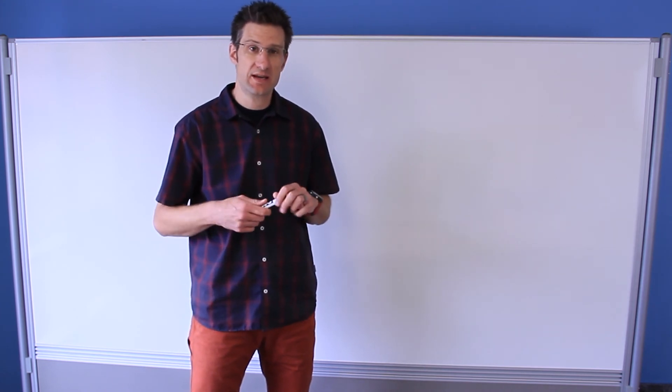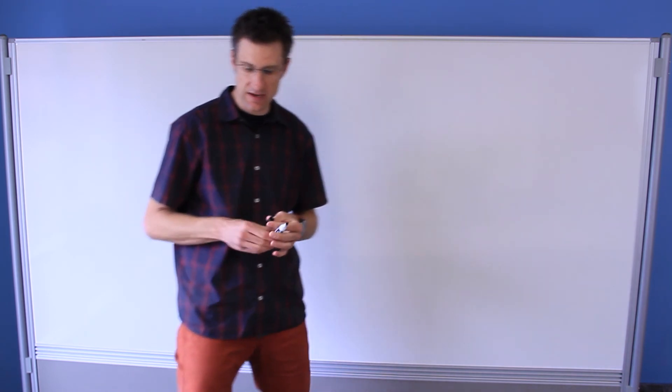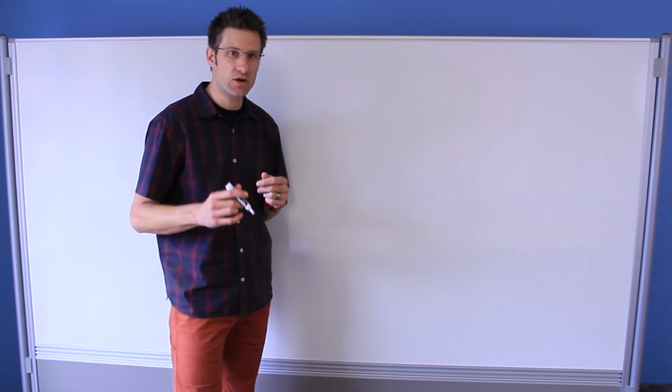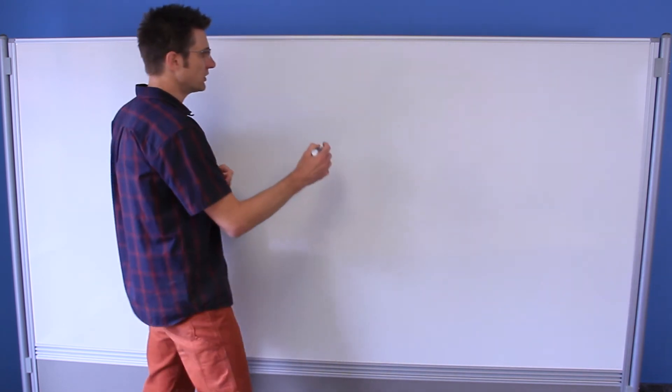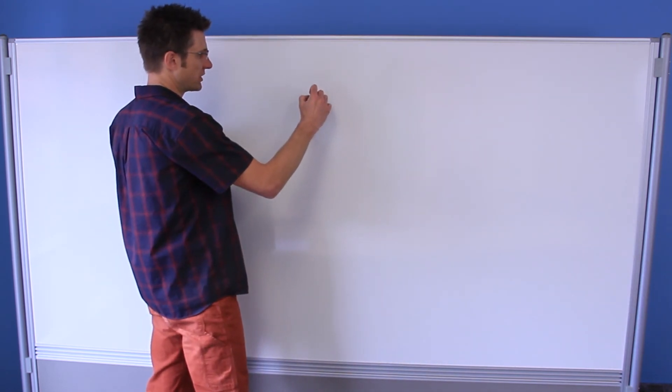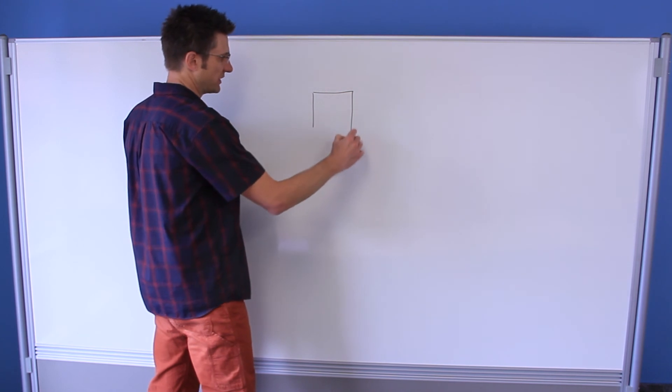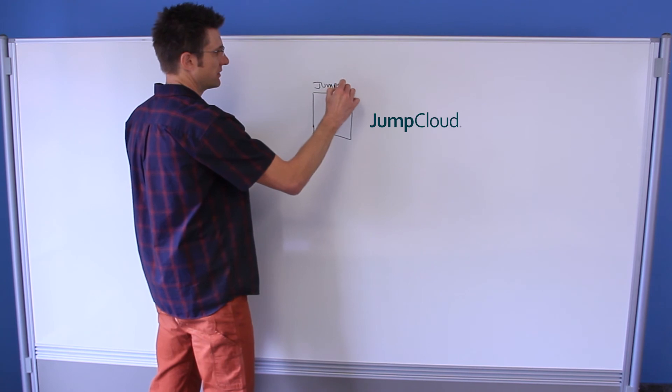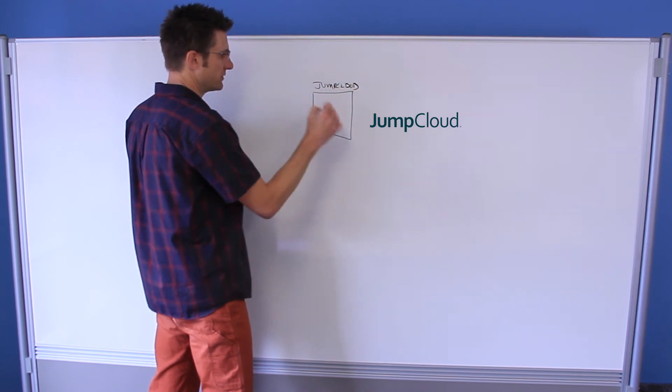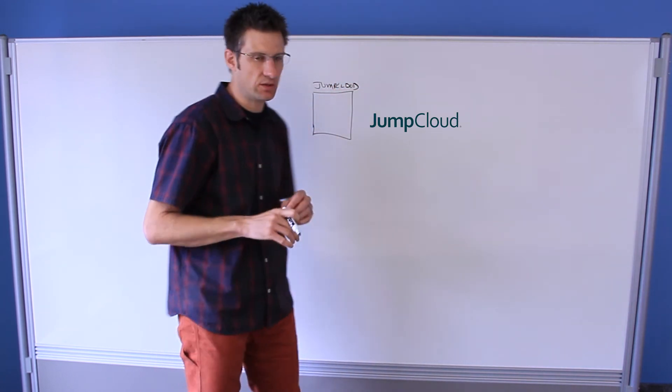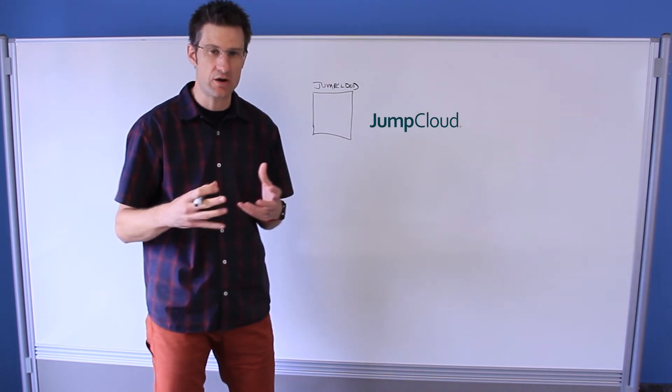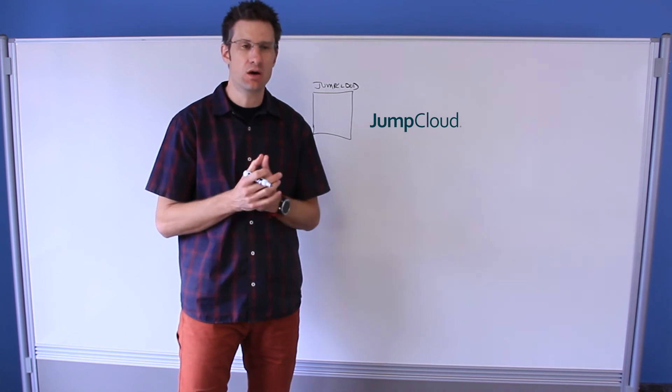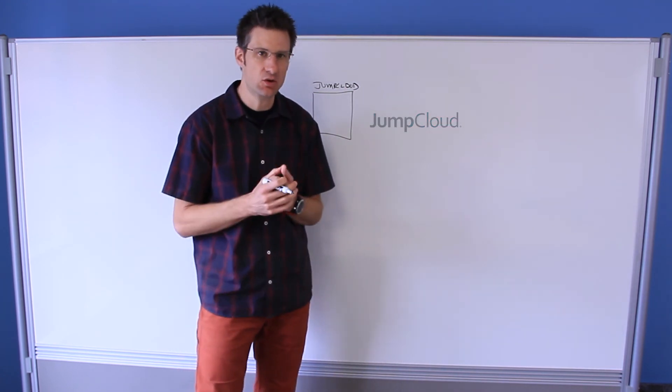So the best way to get started is to bring out our trusty pen and let's walk you through the conceptual architectures of how our integration bridge works. So first and foremost we will start as always with JumpCloud. This box is JumpCloud's directory as a service. It's where you're managing your core user accounts, credentials, all the stuff that you know very well what JumpCloud does at its core.